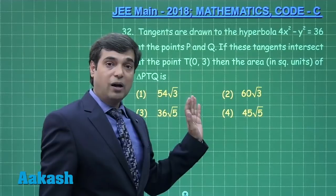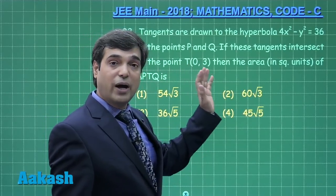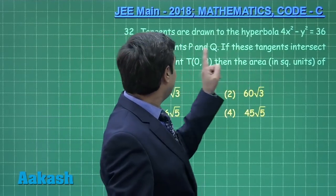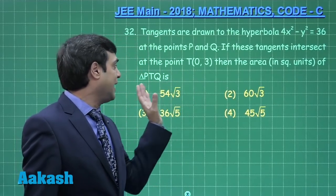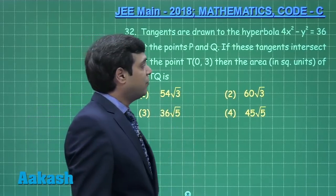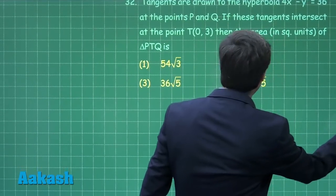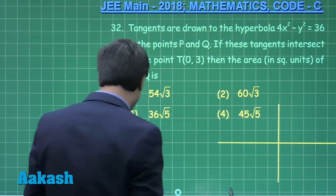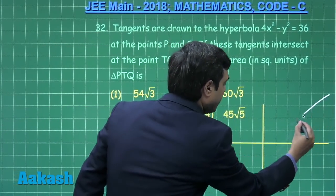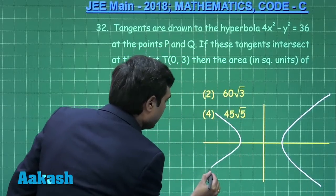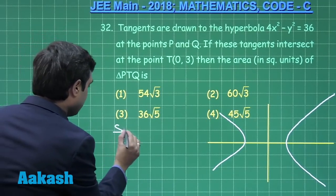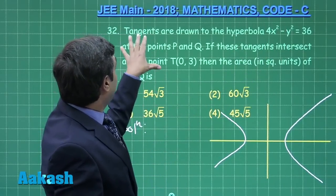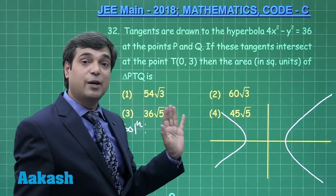Tangents are drawn to the hyperbola 4x² − y² = 36 at points P and Q. If these tangents intersect at point T, we need to find the area of triangle PTQ. This is a question from coordinate geometry. Let us draw the hyperbola first as given. The hyperbola is 4x² − y² = 36, and tangents drawn at points P and Q intersect at point T.